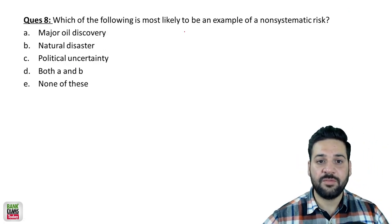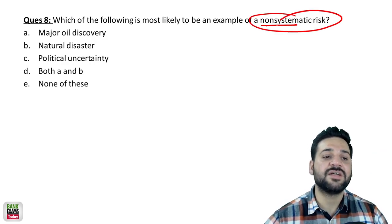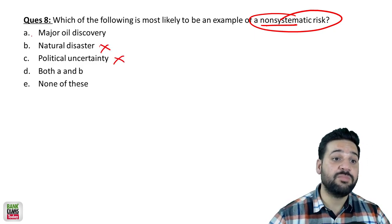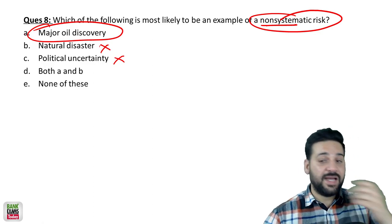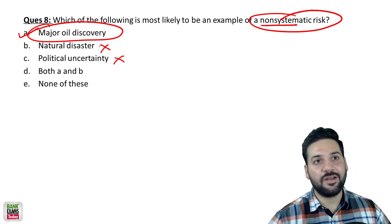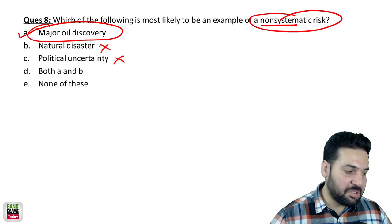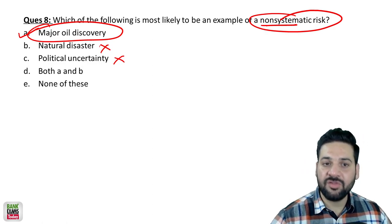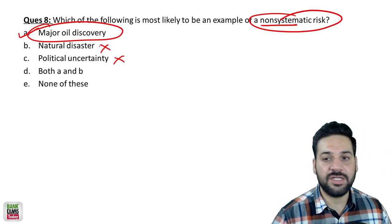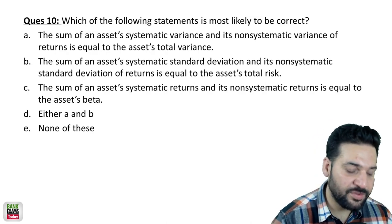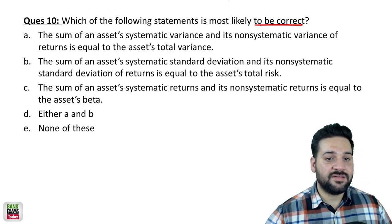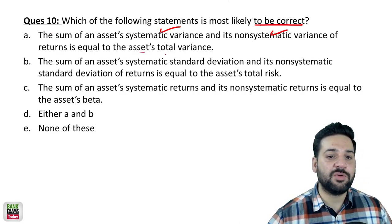Which of the following is most likely to be an example of non-systematic risk? A natural disaster is systematic; political uncertainty is systematic. But a major oil discovery — that can be an unsystematic risk to the solar power industry or wind energy industry, or it can give windfall gains to the company that explored the oil. So major oil discovery can be an unsystematic risk. And which of the following statement is most likely correct? The sum of an asset's systematic variance and non-systematic variance is equal to total variance.